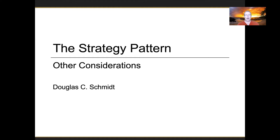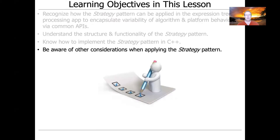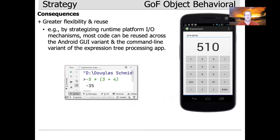We're going to talk about other aspects of the strategy pattern, looking at the pros and cons and implementation considerations. Some of the nice things about this pattern is it enables much greater flexibility and reuse by strategizing runtime platform I/O mechanisms. For example, we can reuse a lot of the code across different variants of our program. If you were to look at the Java versions of this, you'd see that in spades.